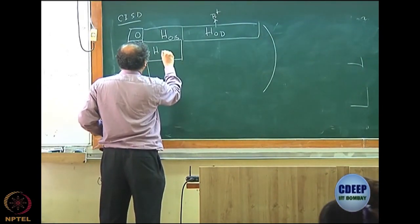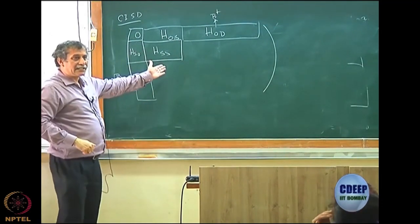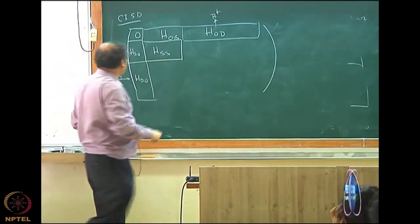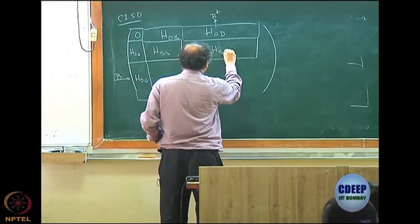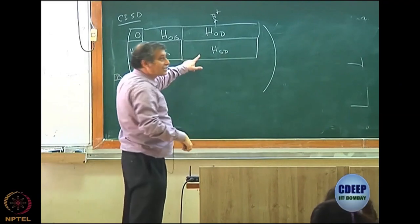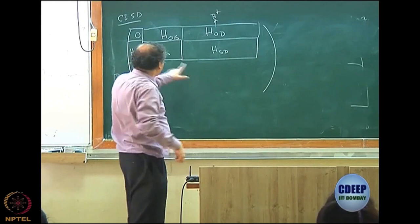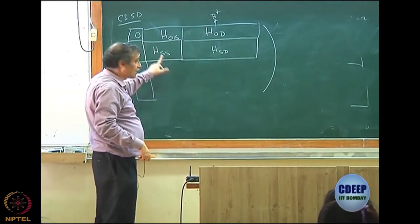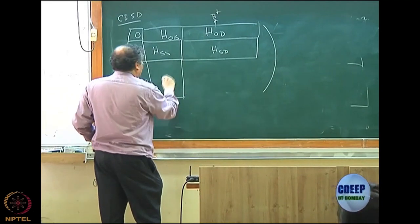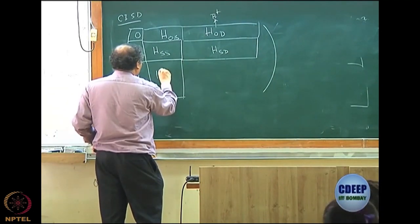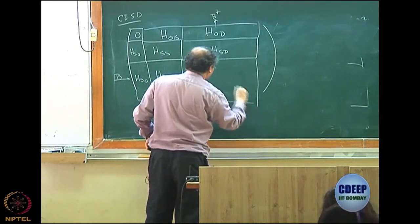Just trying to put you in the perspective. This is the new block that is coming in. It is a block matrix. What would be this block? This block would be HSS, between one set of singly-excited to another set of singly-excited. And this block will be HSD. This is matrix. These are all matrix. However, this is a rectangular matrix because number of singles is different from number of doubles.